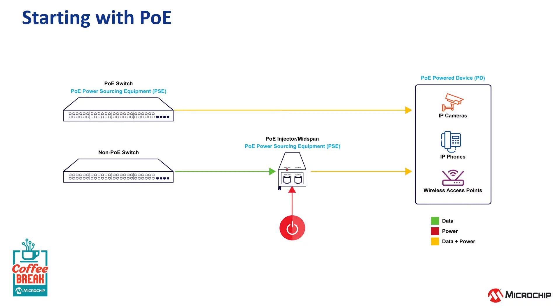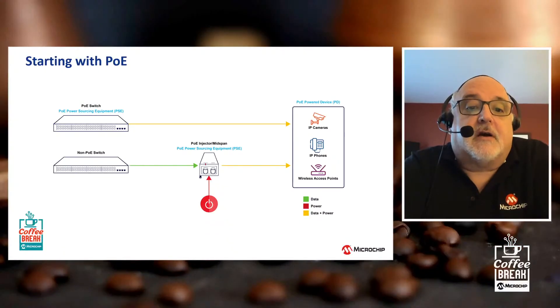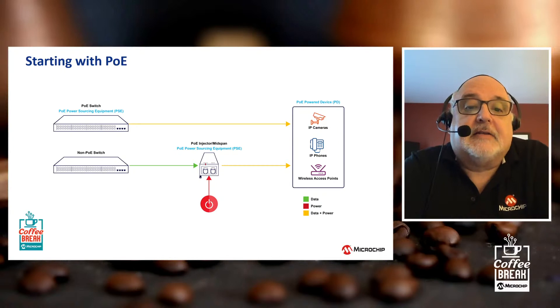How long ago was that technology developed? The technology was developed originally in 1997 by a company called PowerDesign. PowerDesign got acquired by MicroSemi, and MicroSemi became Microchip. Today, Microchip's Power over Ethernet business unit is the business unit that invented Power over Ethernet. 1997 was when we invented the ability to put power on a line. We realized very quickly there were no powered switches yet, so we used our own chip to invent the mid-span, and we introduced it in 1998.